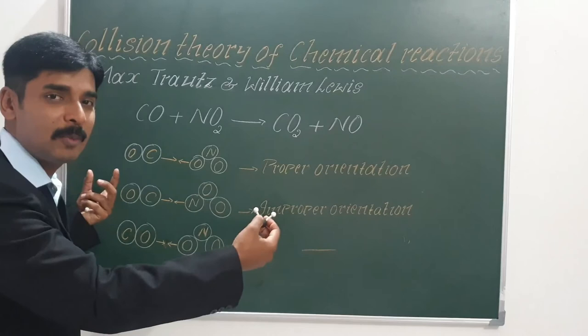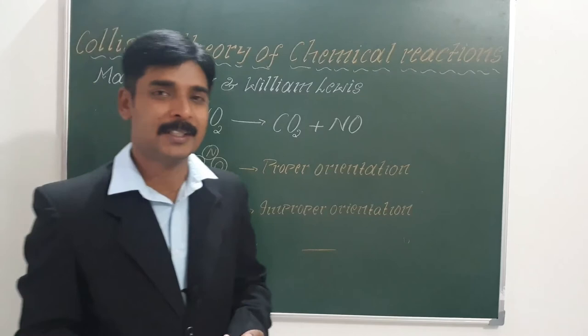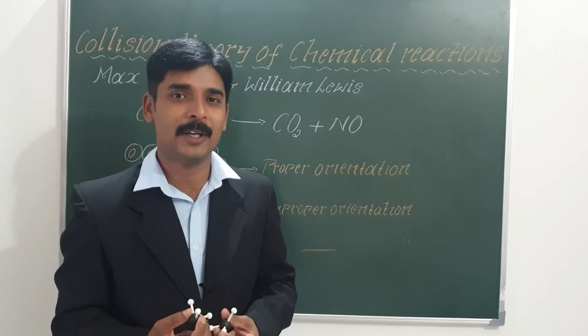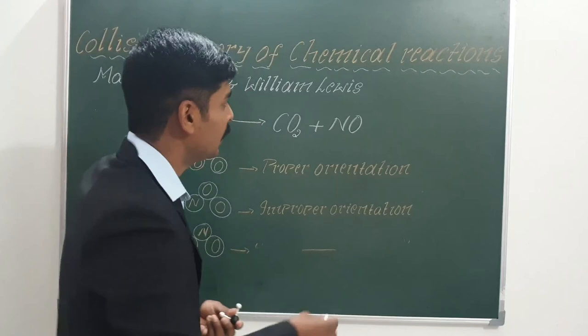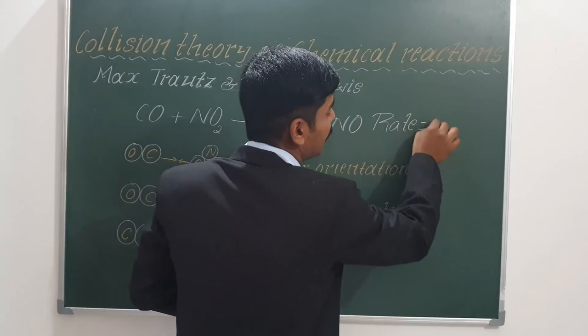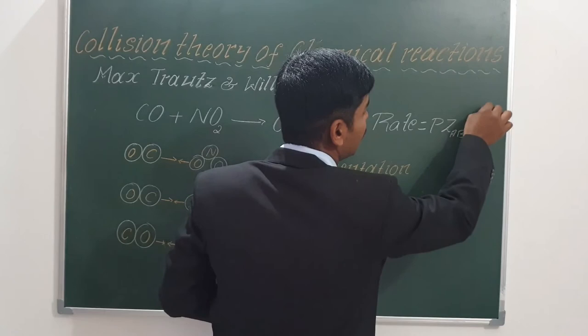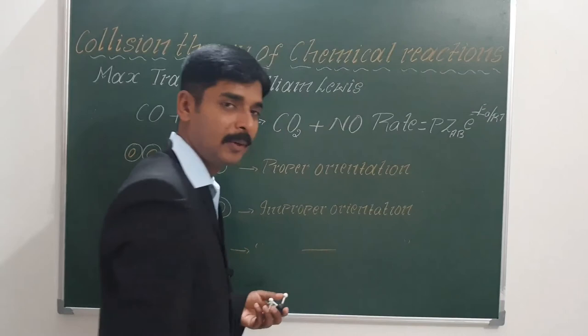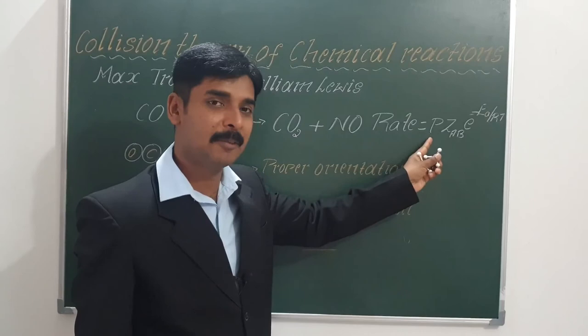So according to collision theory, the first condition is that the reactant molecules must have a minimum energy called the threshold energy, and the second condition is that they must have proper orientation. When the reaction involves complex molecules, the rate of reaction can be written as: rate equals P times ZAB times e to the power minus Ea by RT, where a new factor P called the orientation factor or probability factor must be introduced.